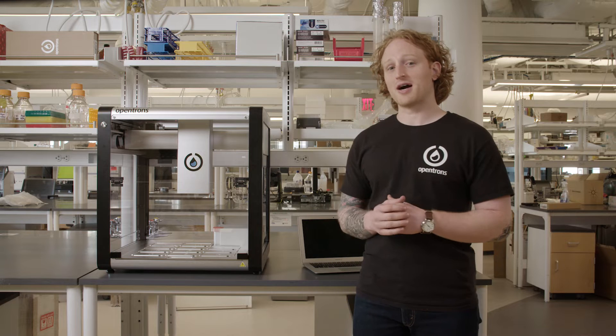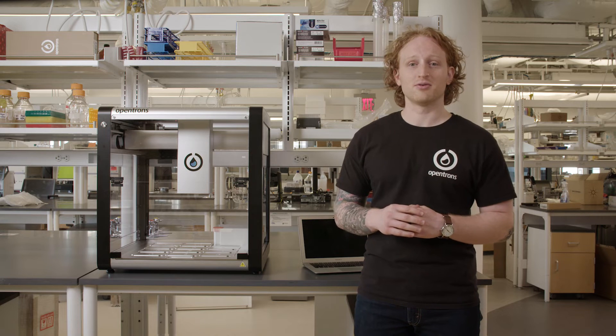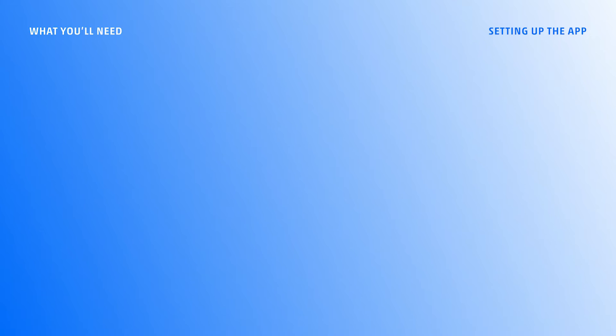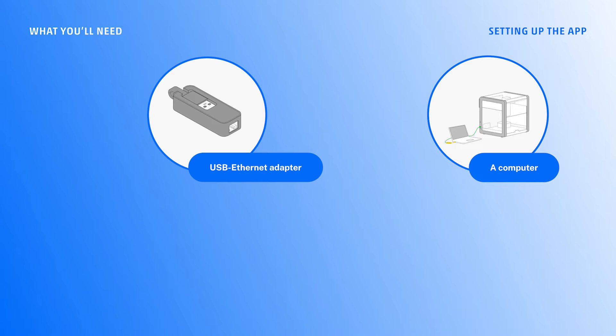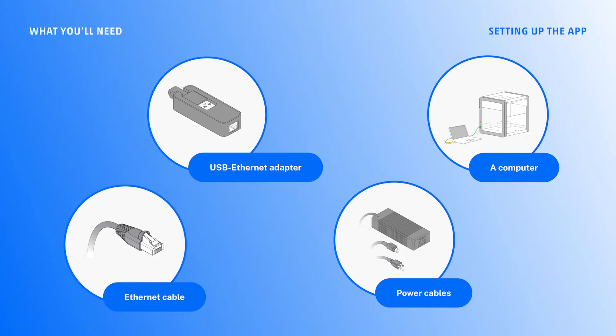Since I have already unboxed and unlocked the OT2, all I need this time is a computer, a USB to ethernet adapter, an ethernet cable, and the power cables that were included in the larger foam enclosure and the accessories box.